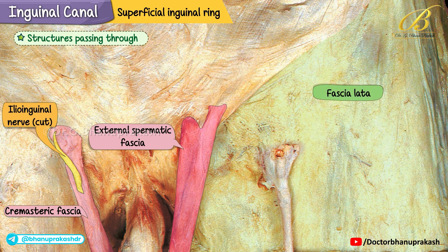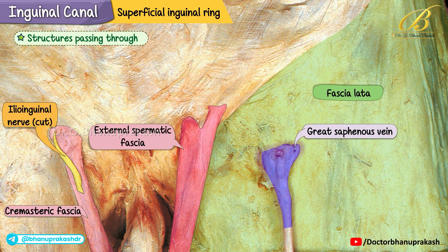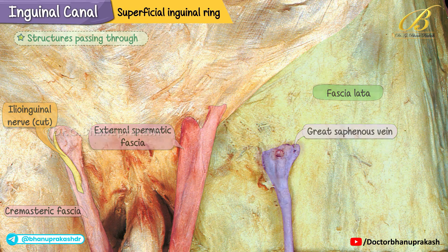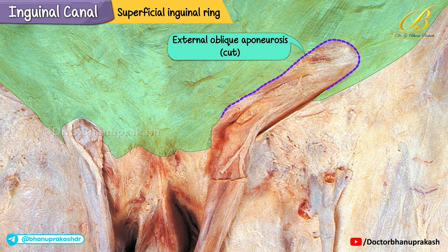Below this region you can also appreciate the fascia lata of the thigh and the terminal part of the great saphenous vein, which is an important venous landmark draining into the femoral vein. On the left side, the external oblique aponeurosis has been removed.